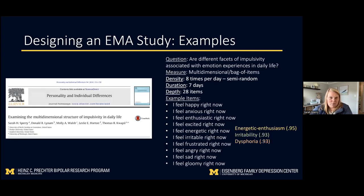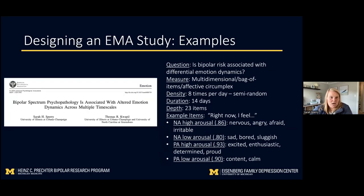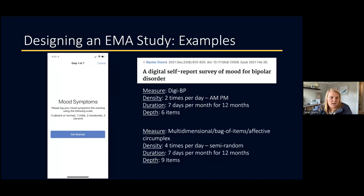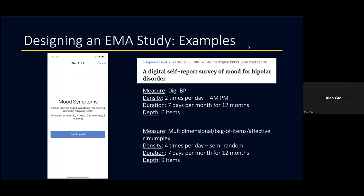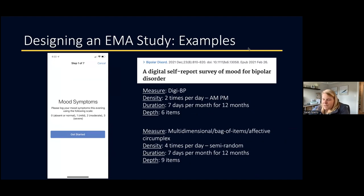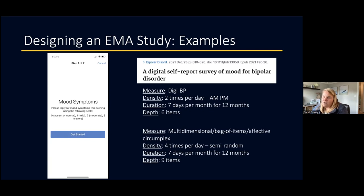One approach worth knowing is the measurement burst design. If you want to measure something over a long period of time using EMA but know people won't do it every day for a year, you do dense sampling in shorter bursts over time. In my current study, participants do a seven-day EMA protocol once per month for 12 months — they're not doing it for the whole month, but doing dense sampling for a shorter period repeated over a longer span. This works pretty well for compliance.